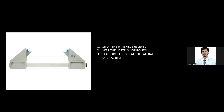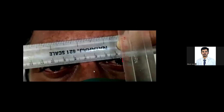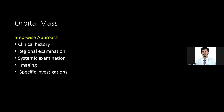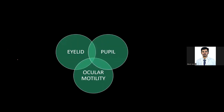After the exophthalmometer, measure the vertical palpebral fissure height because these patients have lid retraction. Then do ocular motility assessment followed by the pupillary examination. If you think the patient has an orbital mass, you must also do palpation. You can memorize or note all these points to mention in your examination before arriving at the diagnosis. It's unlikely they'll give you a proptosis case with a mass, but it's good to know all these points.